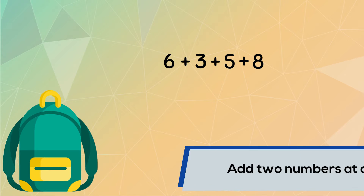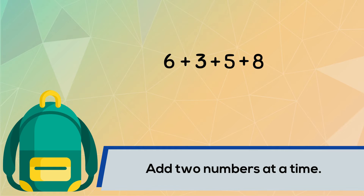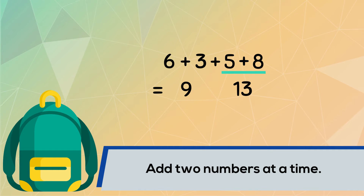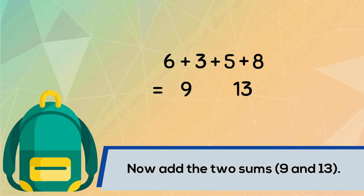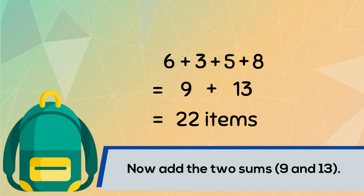We can simplify this by adding two numbers at a time. Six notebooks plus three textbooks equals nine items. Five pencils plus eight crayons equals thirteen items. So now we just add nine plus thirteen, which equals twenty-two items.